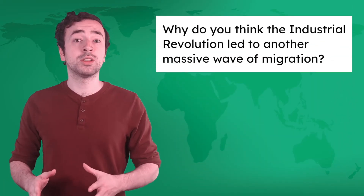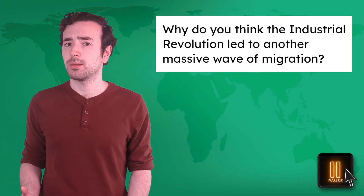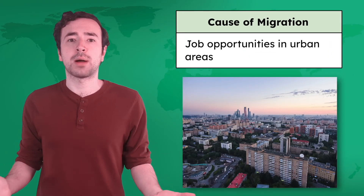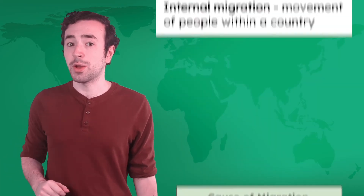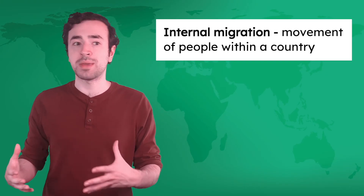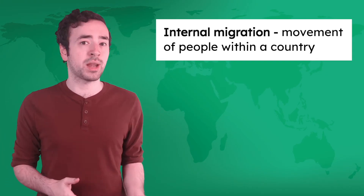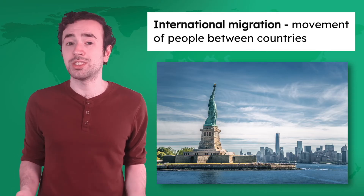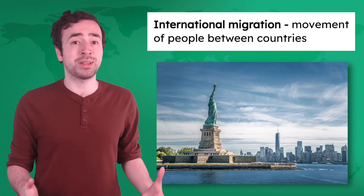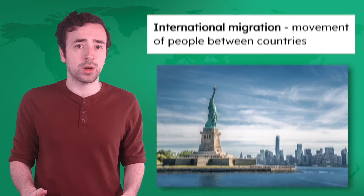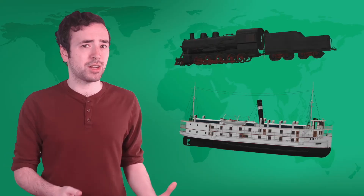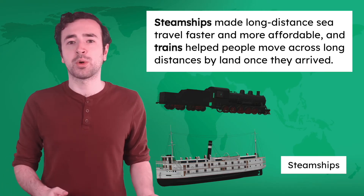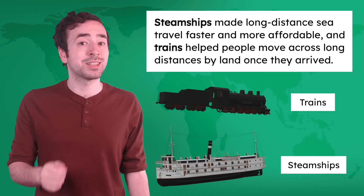Industrialization created lots of job opportunities in rapidly growing urban areas. This led to a wave of internal migration — or movement of people within a country — as people moved from rural to urban areas in search of work. International migration between countries increased too. The United States was a rapidly industrializing country that became a destination for millions seeking work. Steamships made long-distance sea travel faster and more affordable, and trains helped people move across long distances by land once they arrived.